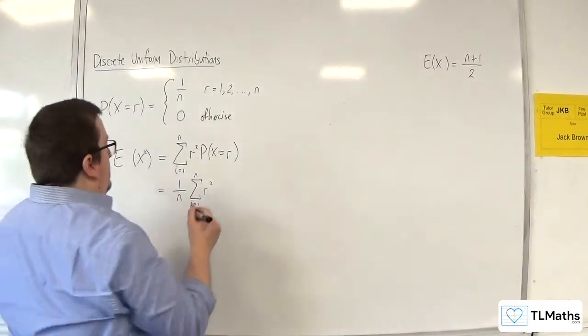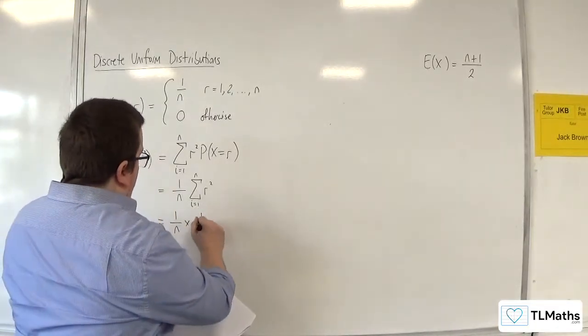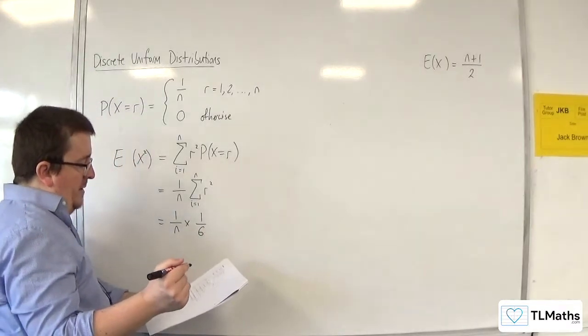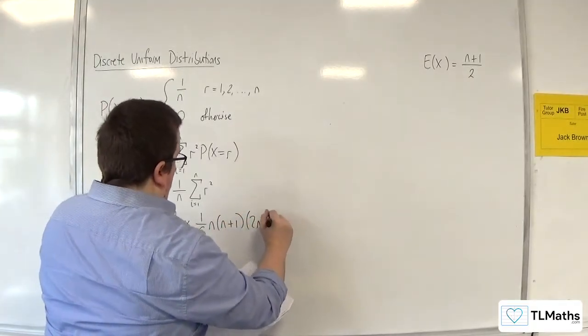So this is going to be equal to 1 over n times by 1 over 6, so this is on page 6 of the OCR MEI formula booklet, n, n plus 1, 2n plus 1.